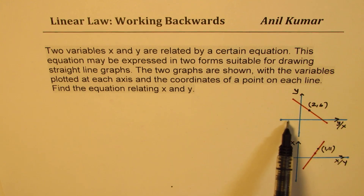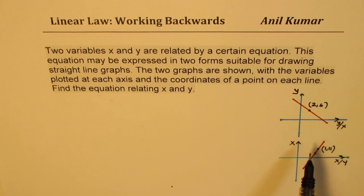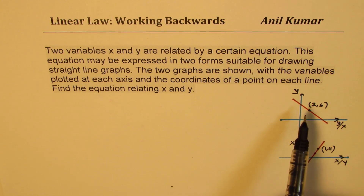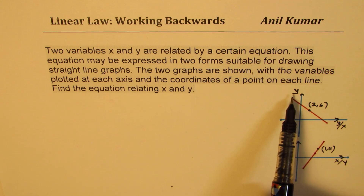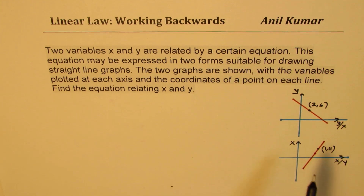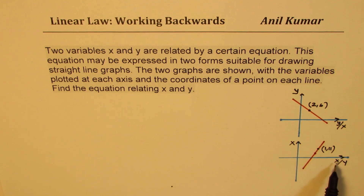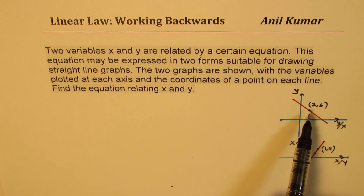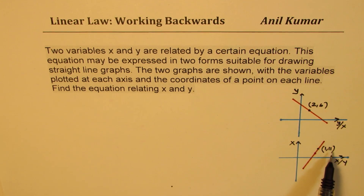On the horizontal axis of the first graph, what do we have? We have Y over X. On the vertical axis we have Y. In the second graph, on the horizontal axis we have X over Y, and on the vertical axis we have X. We are given points (2, 6) in the first graph and (1, 11) in the second graph. Both these graphs are linearizations of a nonlinear function.